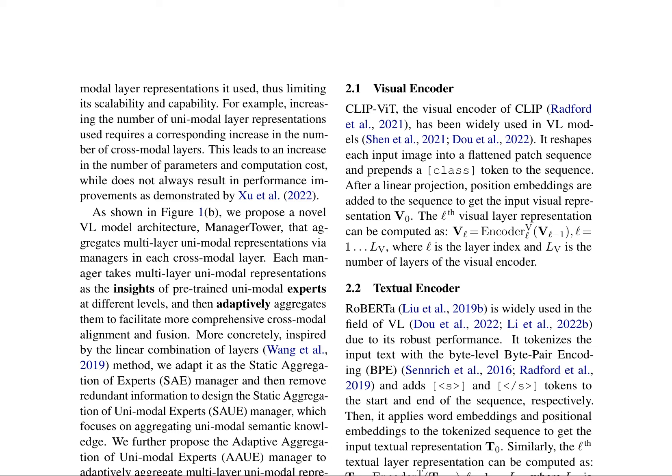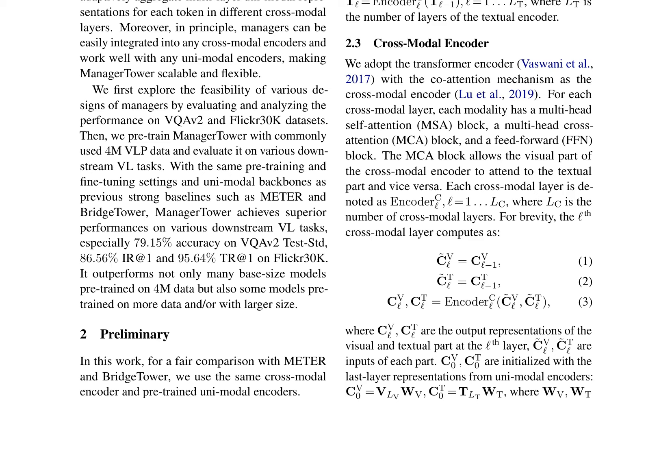The visual encoder, CLIP-ViT, reshapes each input image into a flattened patch sequence and prepends a class token to the sequence. The textual encoder, RoBERTa, tokenizes the input text with byte-level byte-pair encoding and adds special start and end tokens to the start and end of the sequence, respectively.